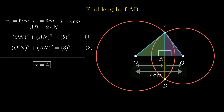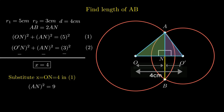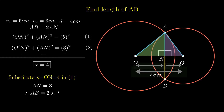Since we need to find segment AN not ON, we substitute X, that is ON equals 4, in equation 1, as it contains variables ON and AN. On simplifying, AN squared equals 9, we get AN as root of 9, which gives us AN equals plus or minus 3. As sides can't be negative, we reject minus 3 and conclude AN equals 3. Now we can calculate the length of the common chord AB as twice of 3, which is 6 cm.